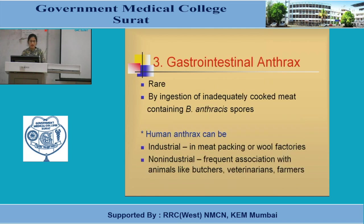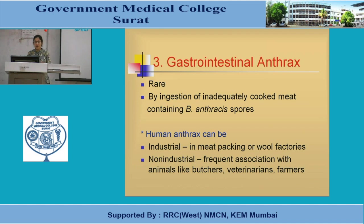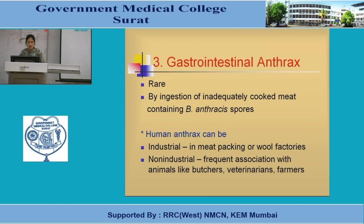The third form is gastrointestinal anthrax, a very rare form due to ingestion of inadequately cooked meat containing spore-bearing bacilli. Human anthrax can also be classified as industrial — occurring in meat packing or wool factories — or non-industrial, with frequent association with animals such as butchers, veterinarians, and farmers.